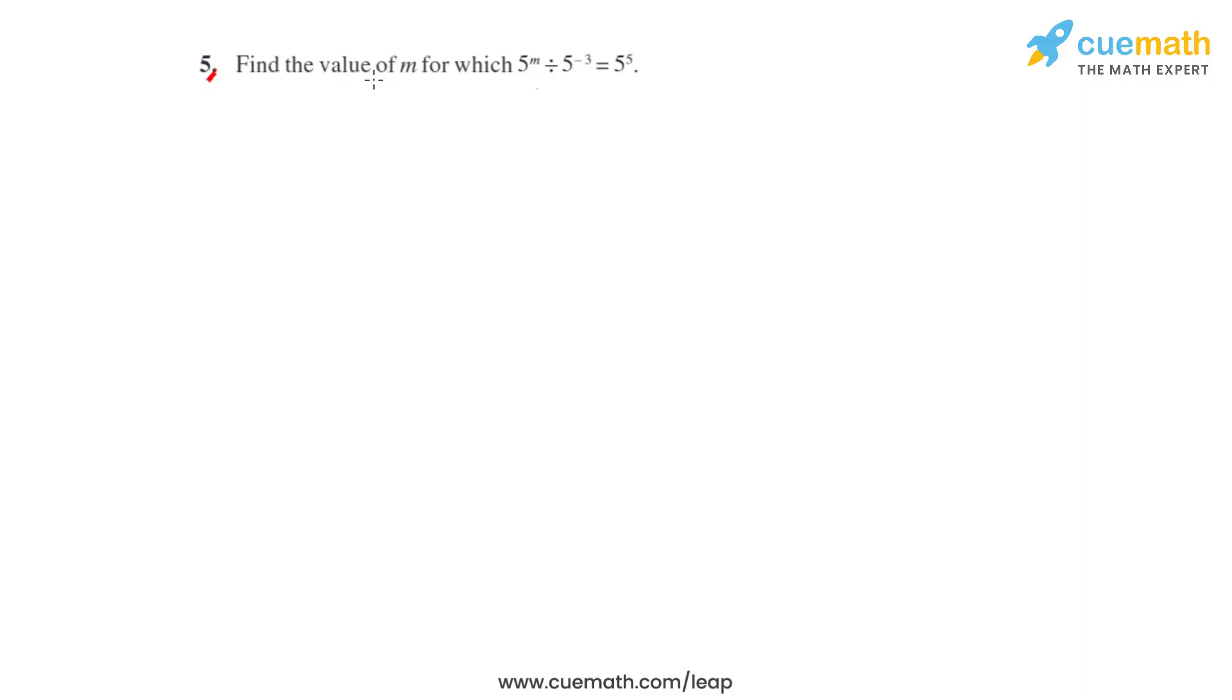Question number 5 says find the value of m for which 5 raised to m divided by 5 raised to negative 3 equals 5 raised to 5.